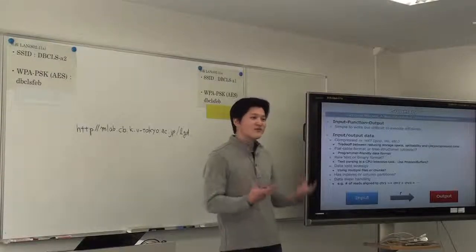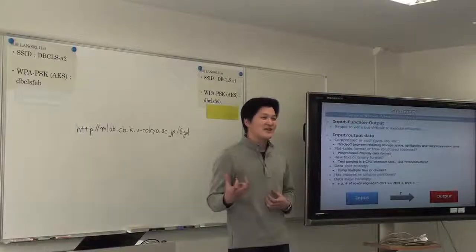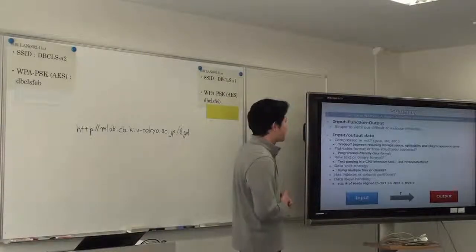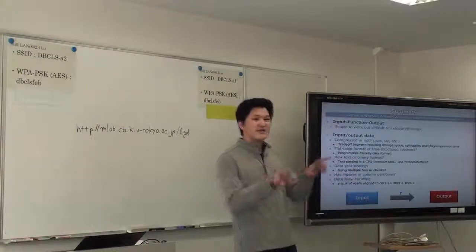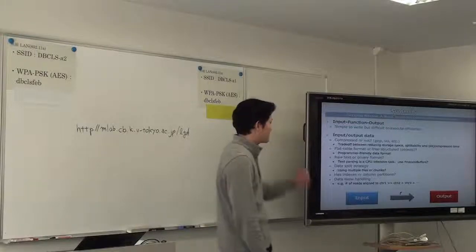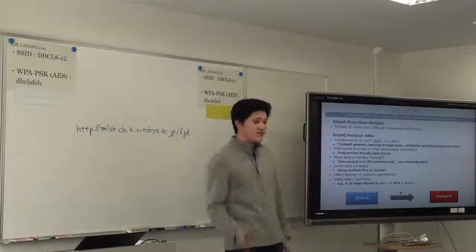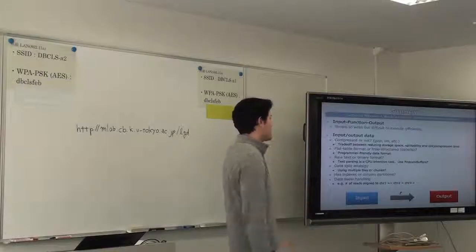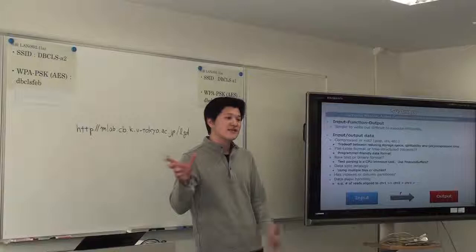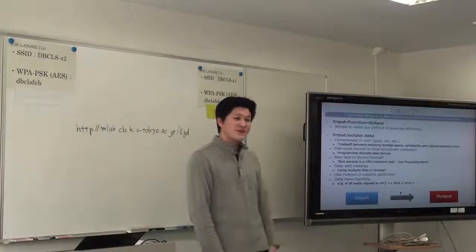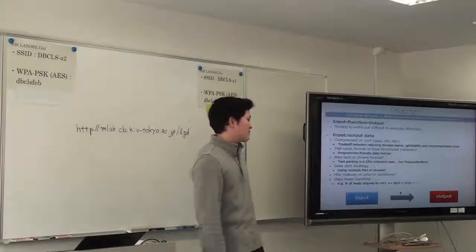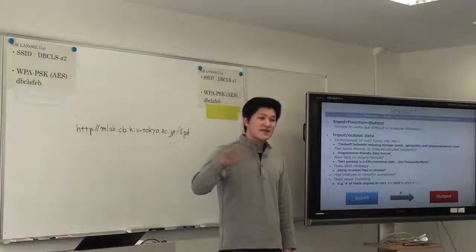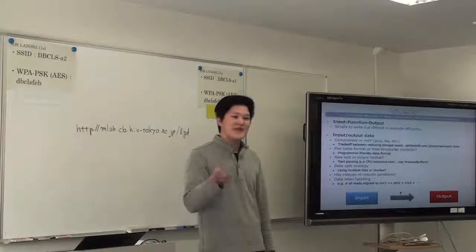We are not sure what type of, how to represent input and output data? Compressed or not? So using gzip. We use the trade-off between reducing storage space, data splittability, and decompression overhead. Using raw text data or tree-structured data is another key. Because we have to, so Hadoop only handles table structure data. But we have needs, we have to work with complex data, including XML and RDF. RDF is quite flat format, but the internal data is very structured. So we have to extend the simple tab delimited format to more general.